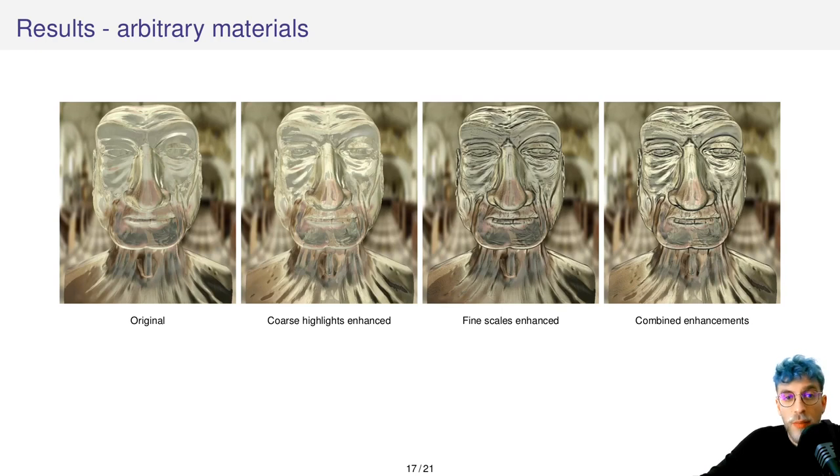Here is an example using a transmissive material, where we use the coarse scales to enhance the highlights, fine scales to enhance refractions, and finally combining the results.